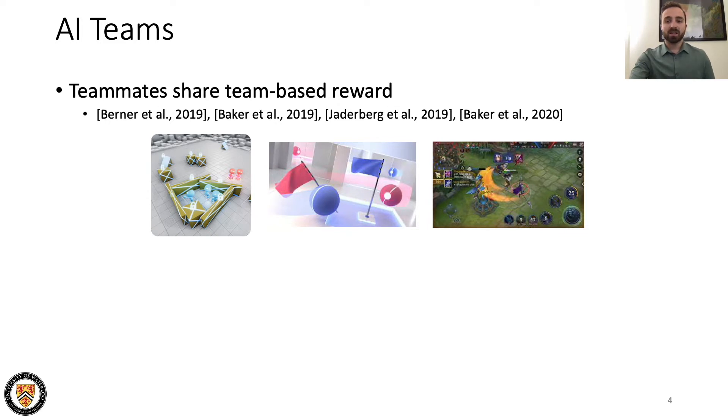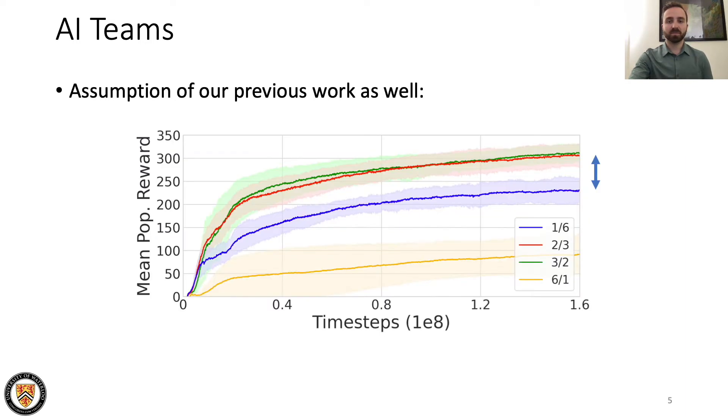In AI, teams are often implemented by providing agents some shared team-based reward signal shown to achieve good results. In our previous work we found that teams, when defined using a shared reward, can promote cooperation among populations with different interests, achieve higher rewards, and lead to faster learning than with agents acting independently or fully cooperative agents acting as a single group.